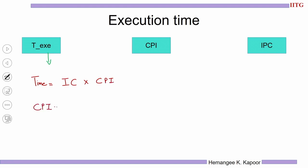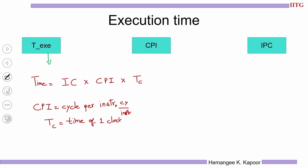CPI stands for cycles per instruction. So we have the instruction count, cycles required per instruction, and then TC — the time taken by one clock cycle. The execution time is therefore: TEXE = IC × CPI × TC. From this same expression we can derive the formula for CPI.